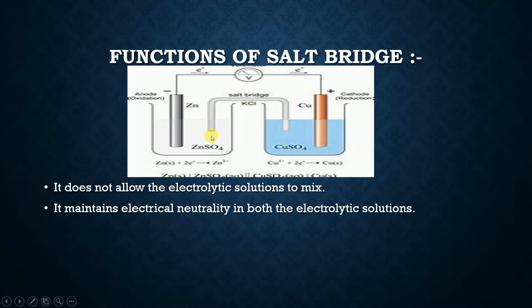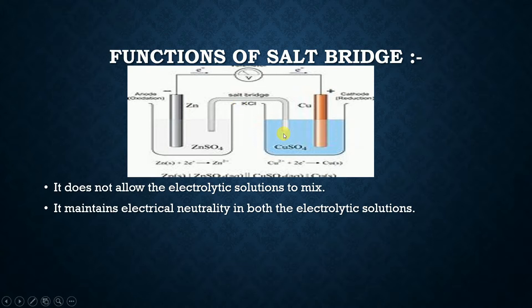Similarly, at the copper electrode, Cu2+ ions are reduced and SO4 2− ions come into the electrolytic solution. To neutralize these SO4 2− ions, K+ which is positively charged will flow into this electrolytic solution.